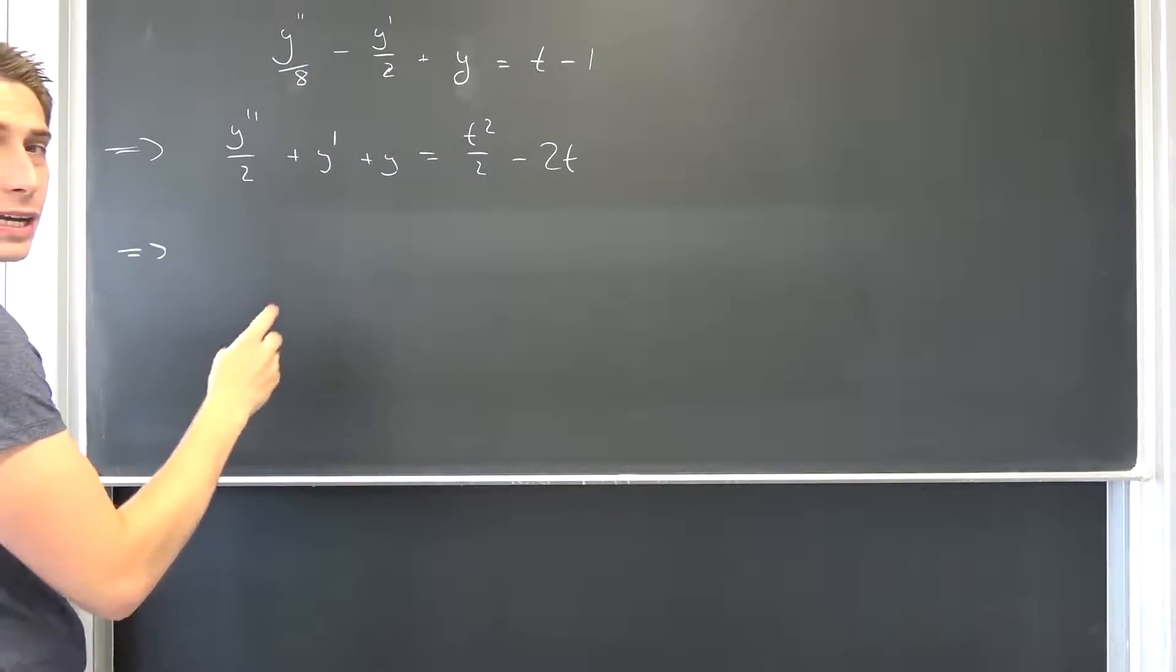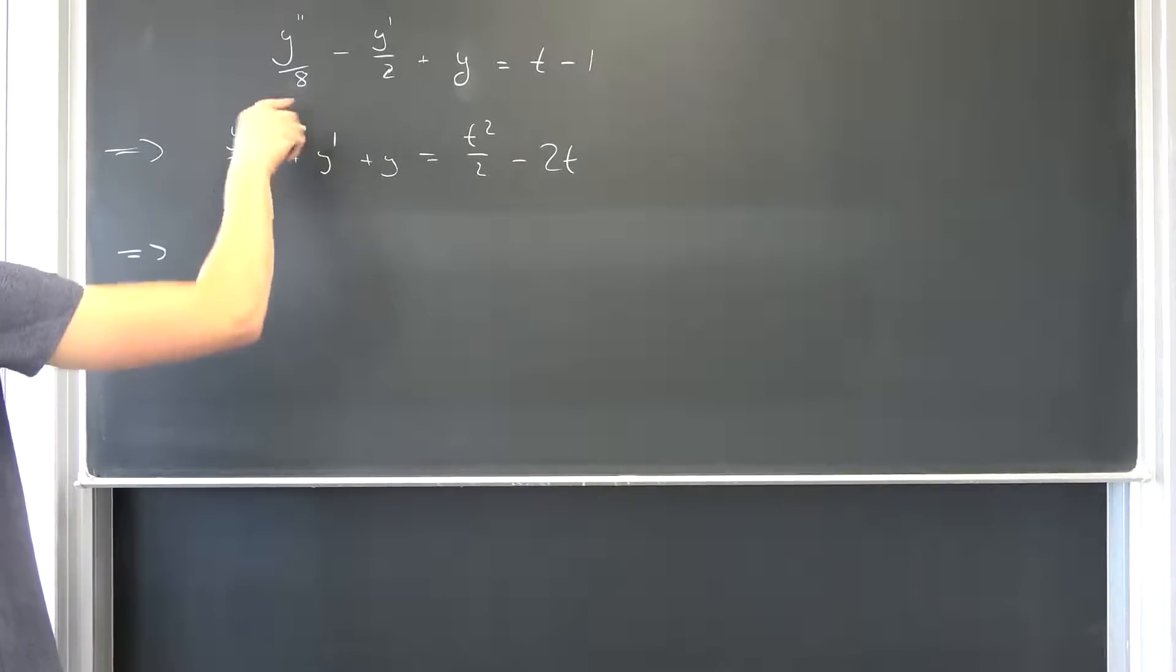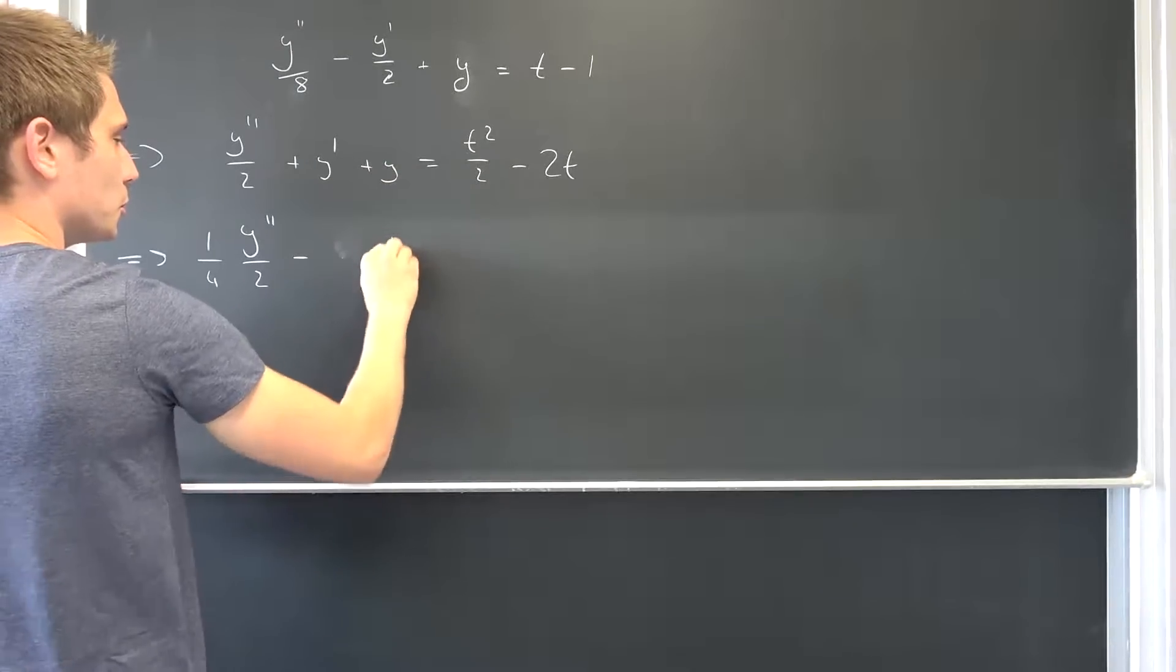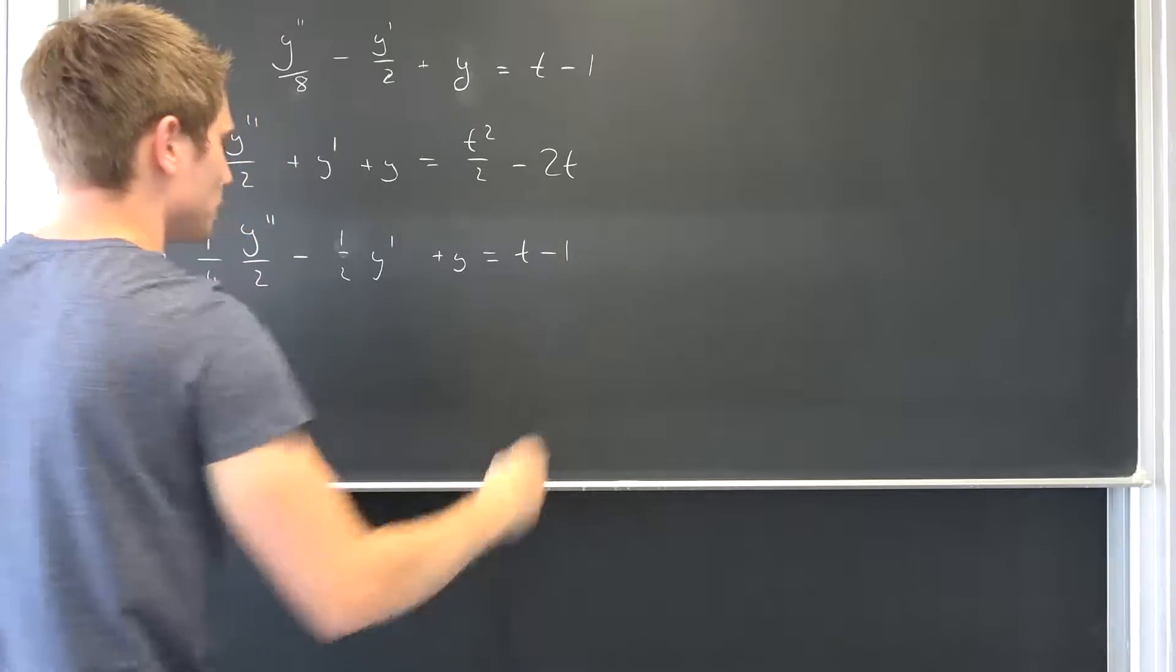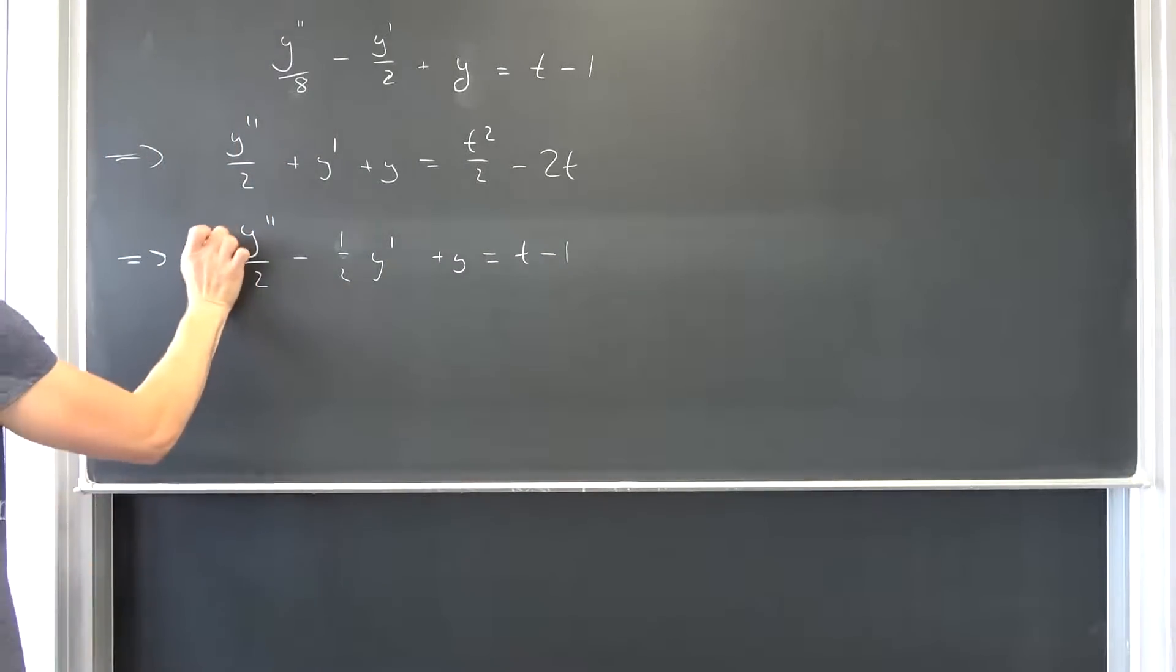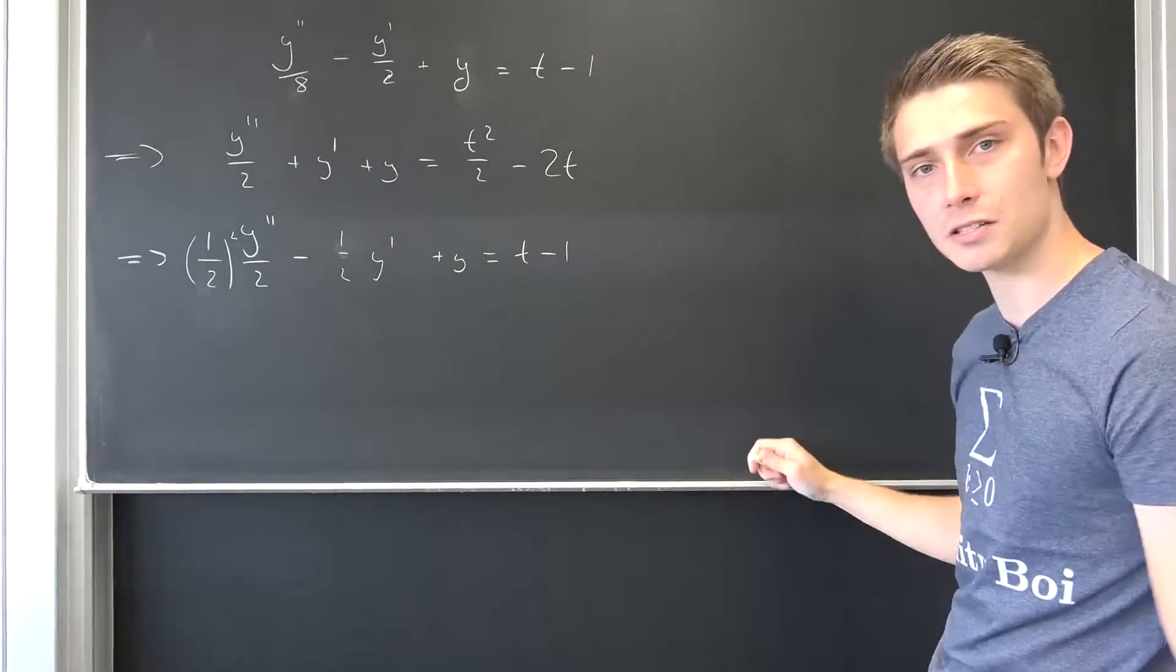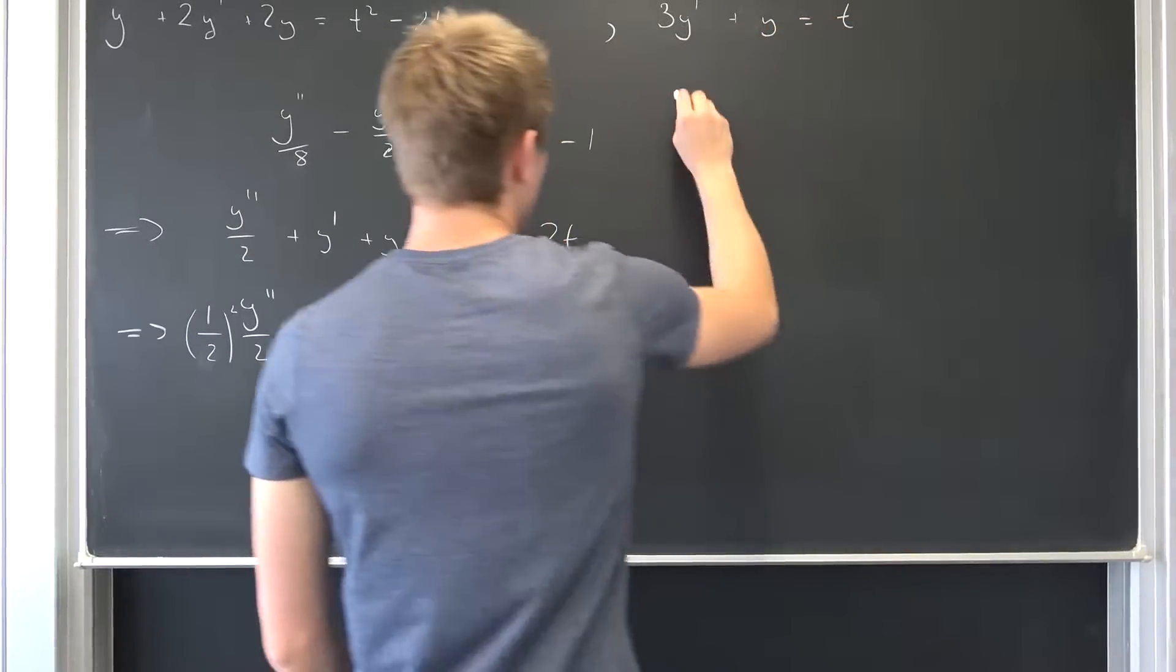For this next one, we are exactly having y double prime over 2 but times 1 quarter, then negative y prime times one half plus y being equal to t minus 1. Now we have one half in front, one quarter is nothing but one half squared. Maybe you can already see something really peculiar here. Those are really special kinds of differential equations.